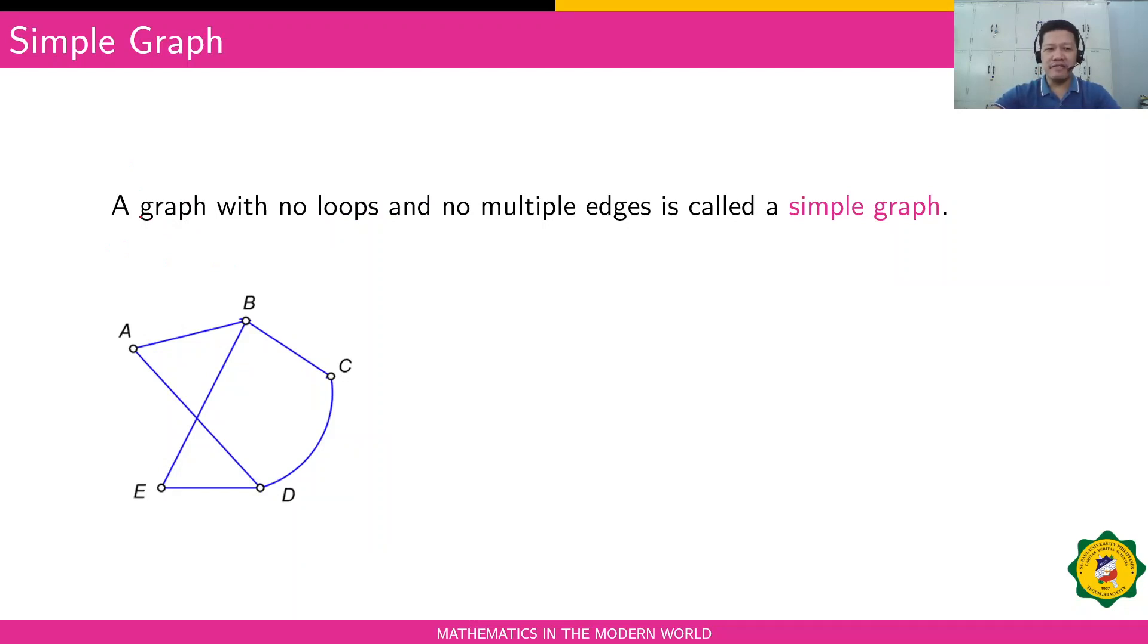Simple graph: a graph is called a simple graph if it has no loops and no multiple edges. We call the graph a simple graph.